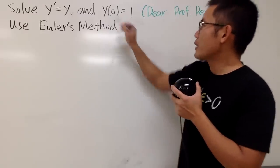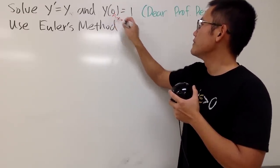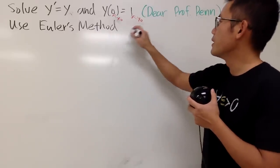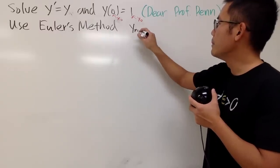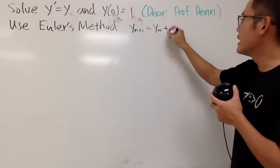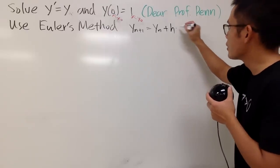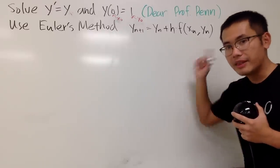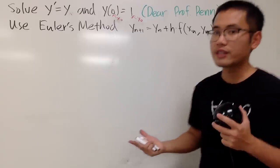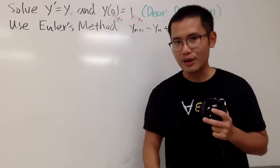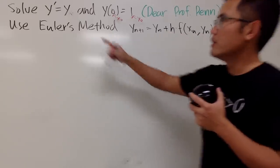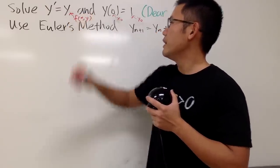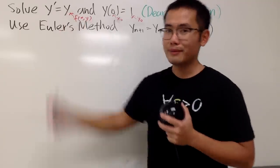Let me remind you: x0 is the initial x value and y0 is the initial y value. To get the new y value, we use the formula: y_{n+1} = y_n + h · f(x_n, y_n), where h is the step size. I do have a proof video on this — link in the description. Now, what is f here? That's exactly y prime, which is our f(x, y). And since f(x, y) = y, it's very nice.